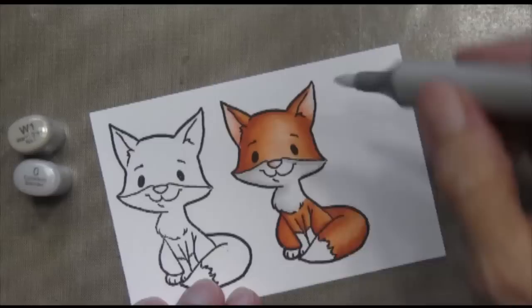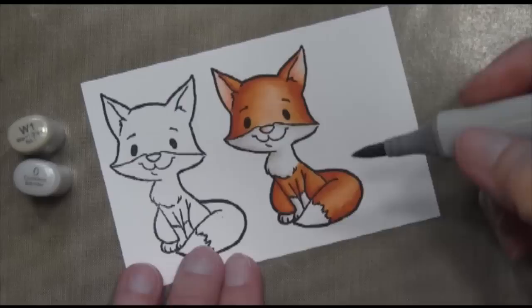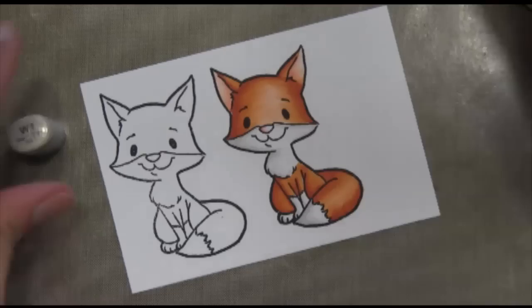For his nose, I used the R02 and then blended it with the zero. For the fur, the fur is white, but you still have some shadow areas. So I took a W1, which is a really light grayish color, and I added just a few highlights here and there, and then I blended it with the zero. So that sort of blends it from the W1 into the white area. That's all I'm going to do on this fox.